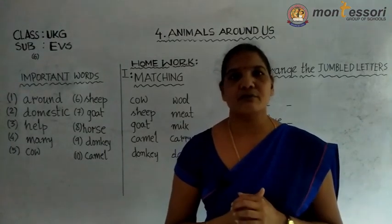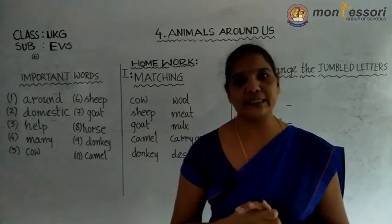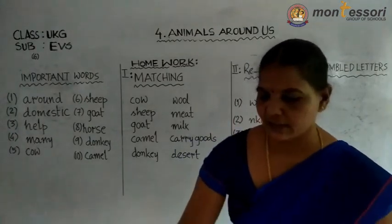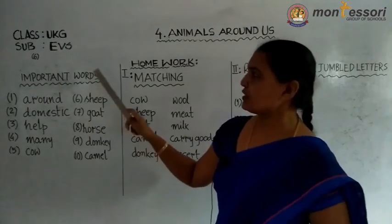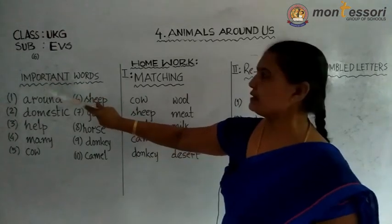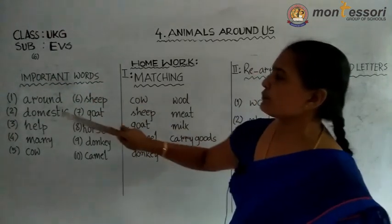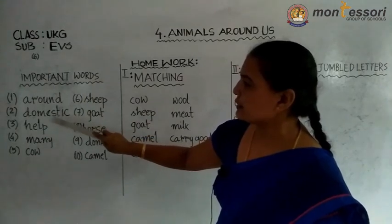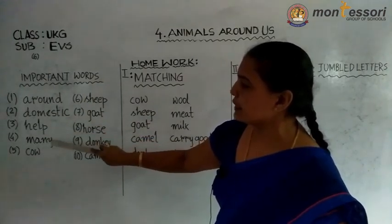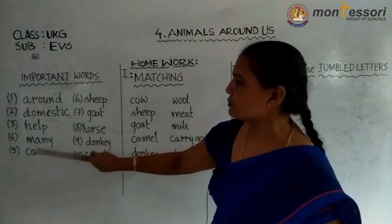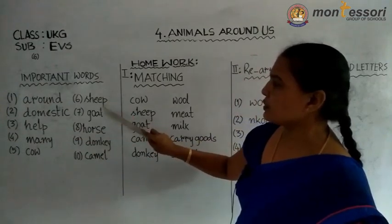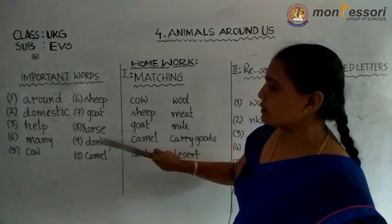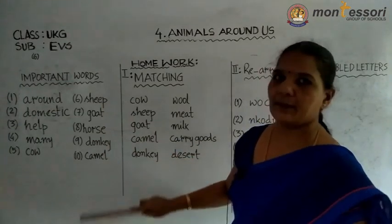I hope you have understood about domestic animals. Now we will read some important words. Here I have written some important words: around, domestic, help, many, cow, sheep, goat, horse, donkey and camel.